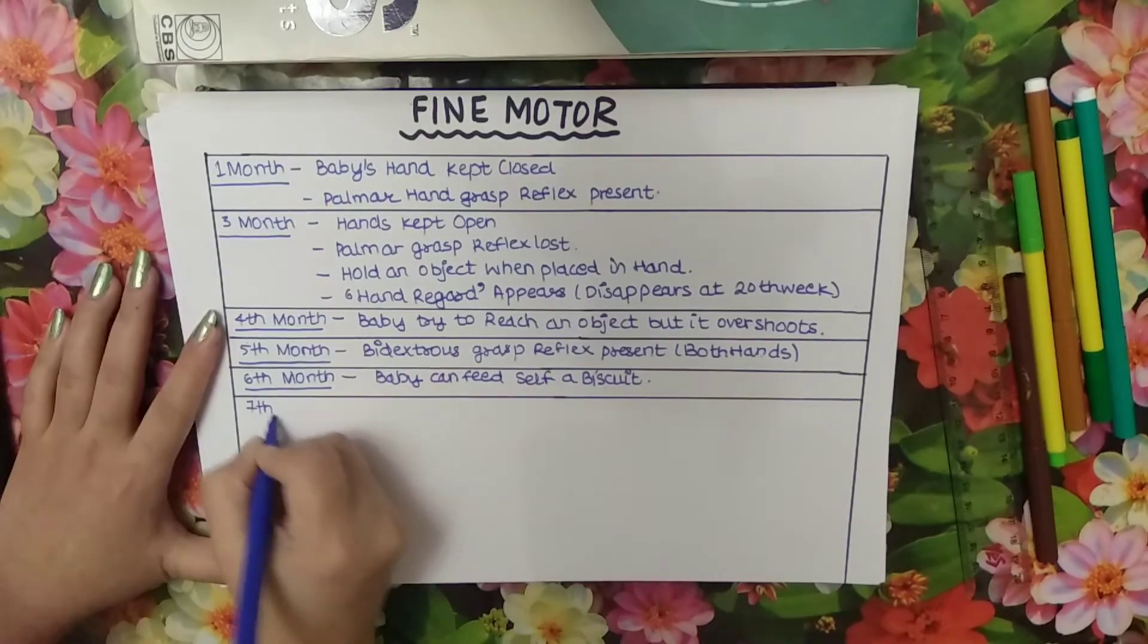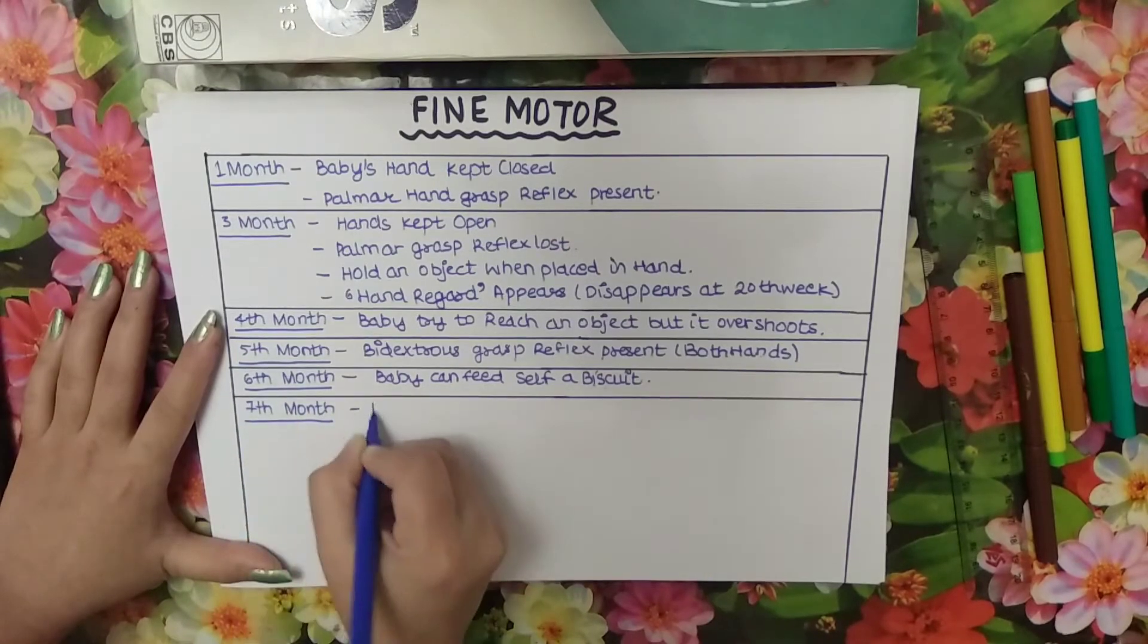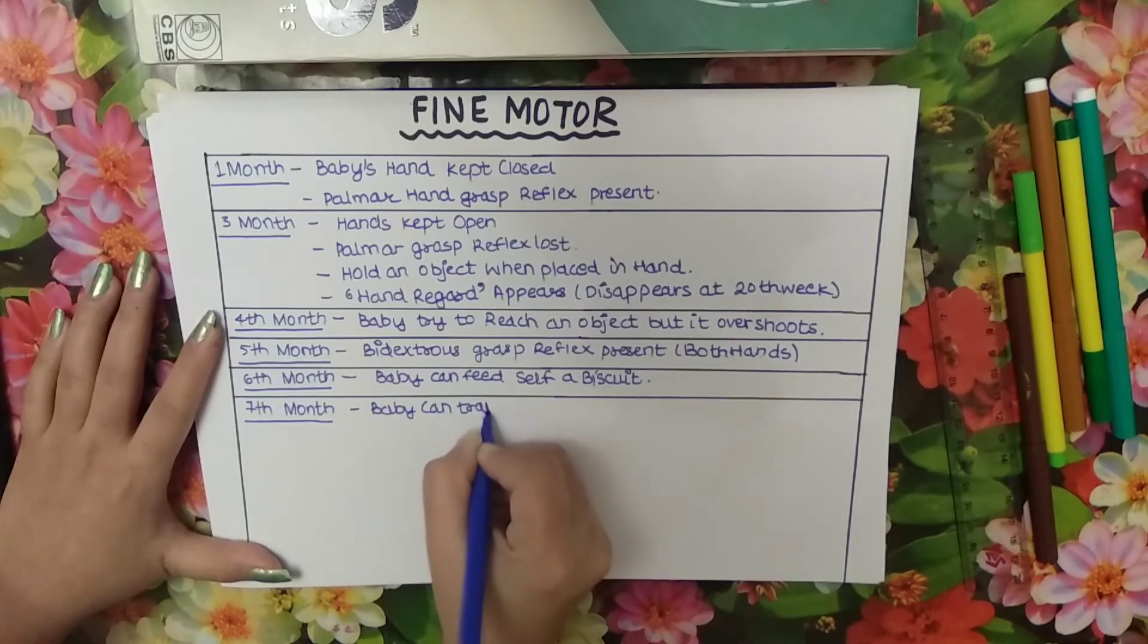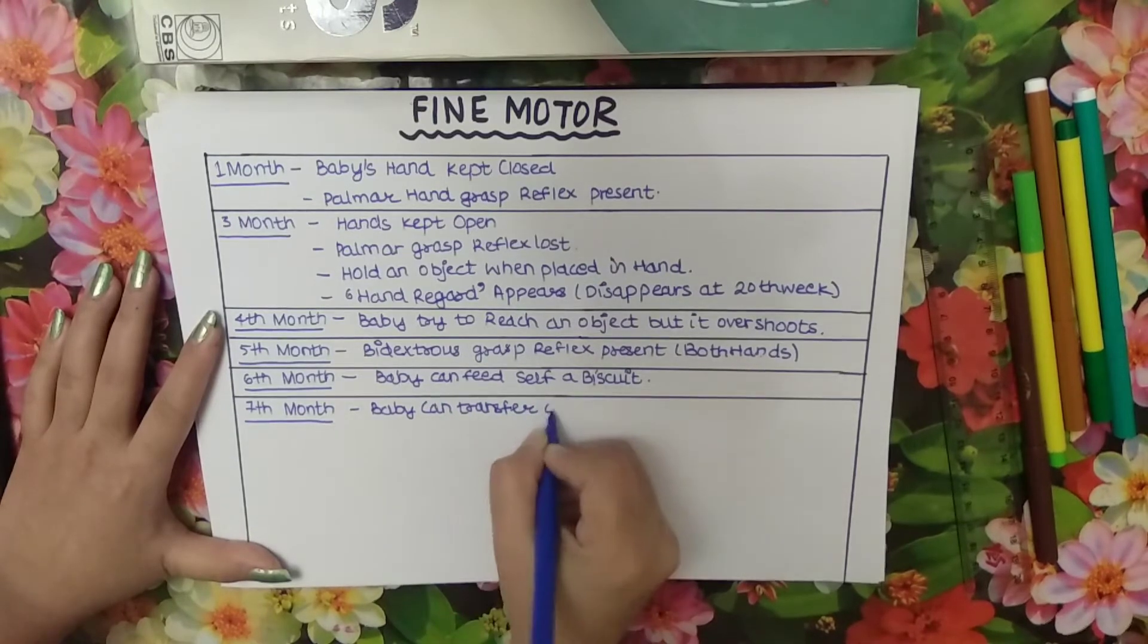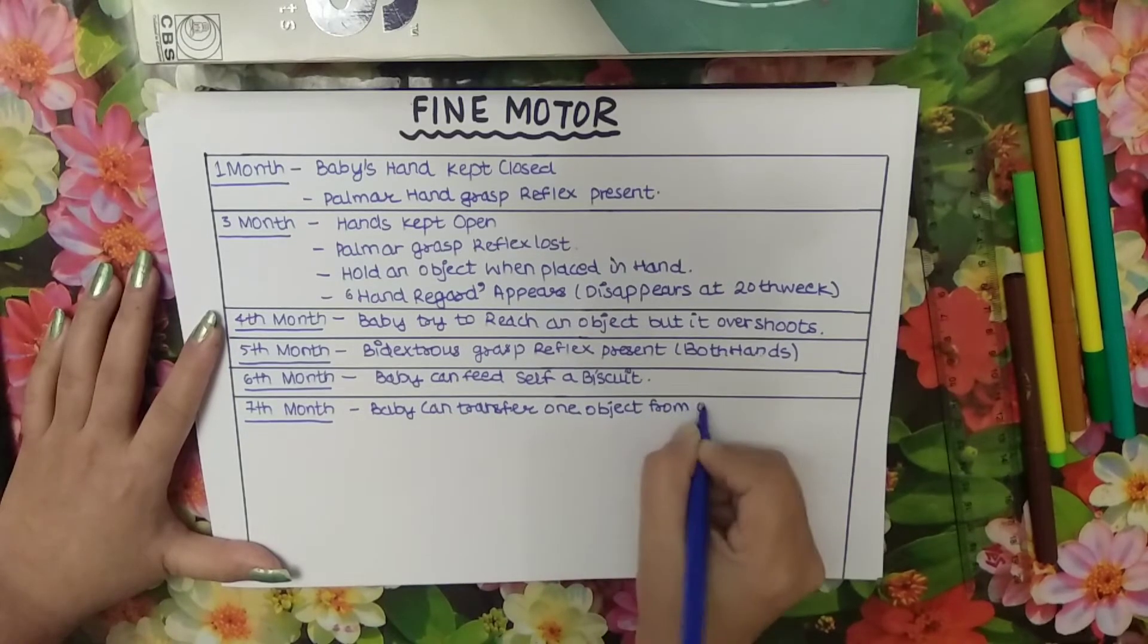In seventh month baby can transfer one object from one hand to another.